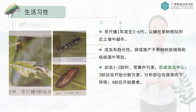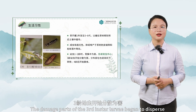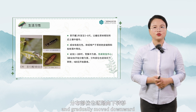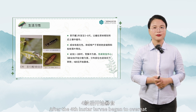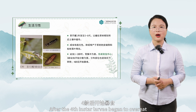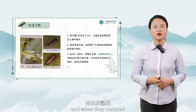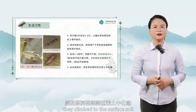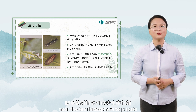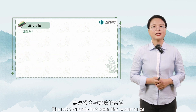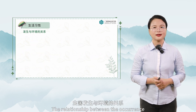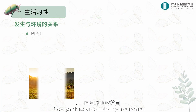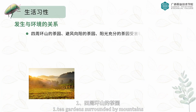Larvae of one to two years old often concentrate their damage, forming a pest center. From the third instar, larvae begin to disperse and gradually move downward. After the fourth instar, larvae begin to overeat, and when mature they climb onto the surface of the soil near the tea rhizosphere to pupate.